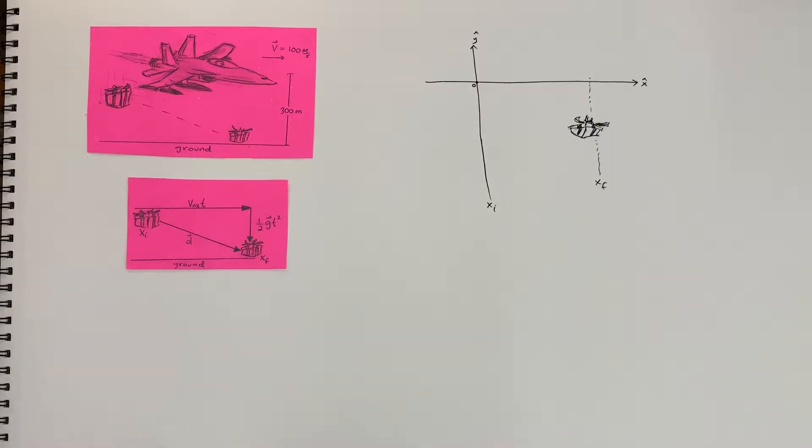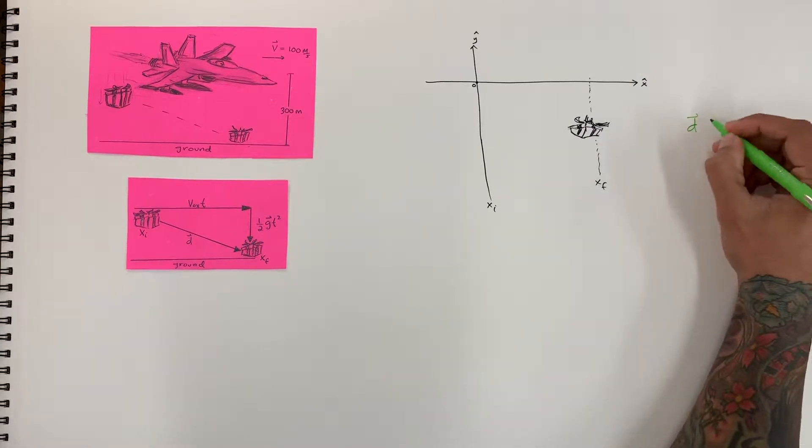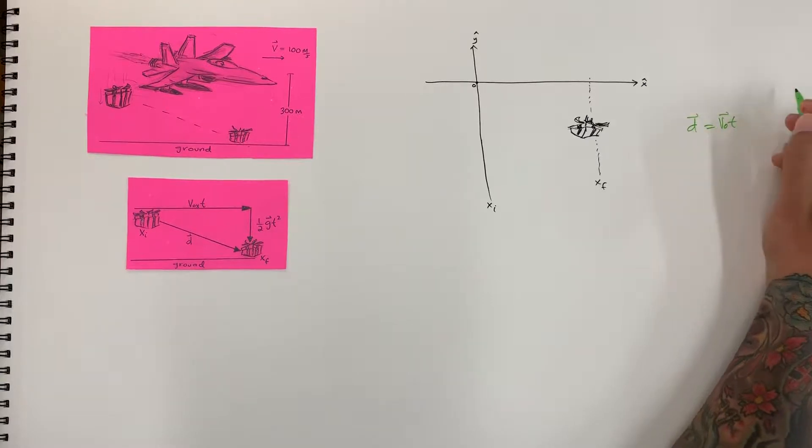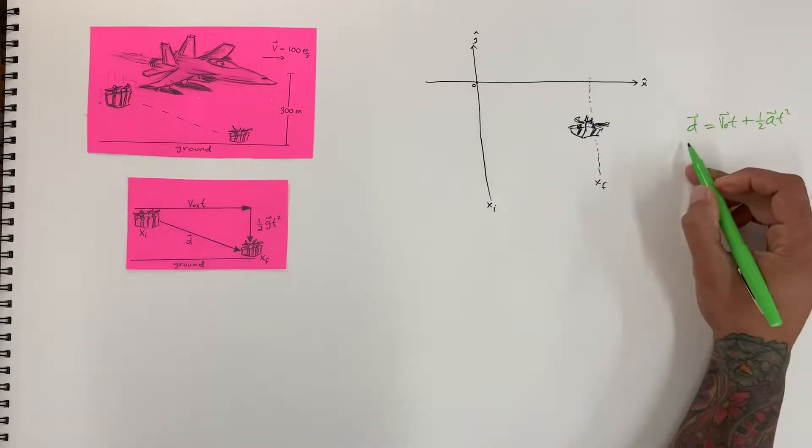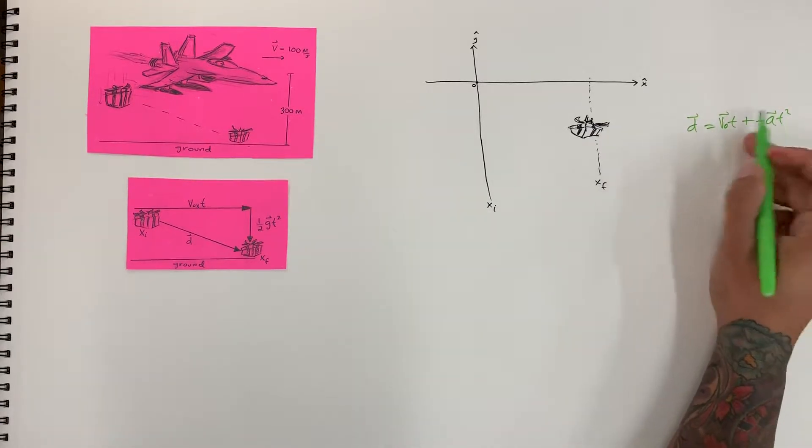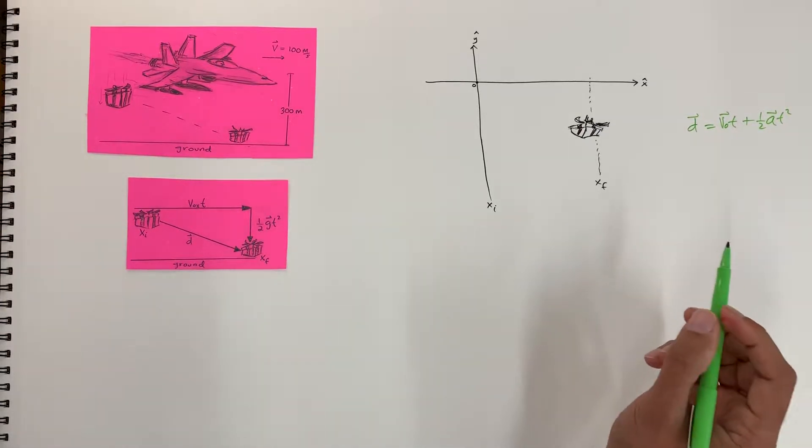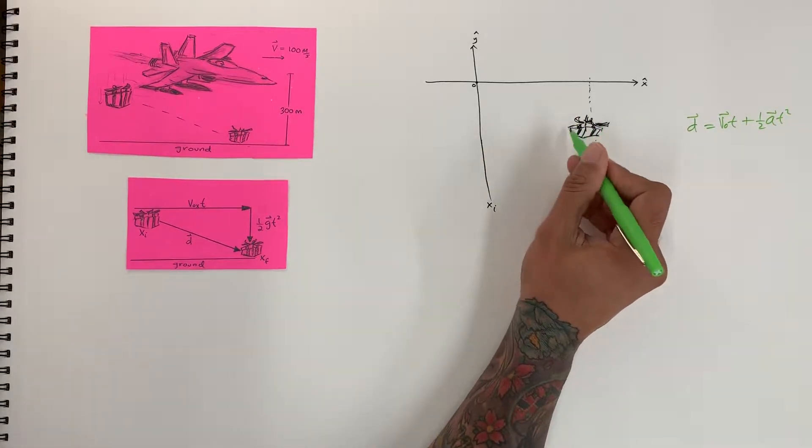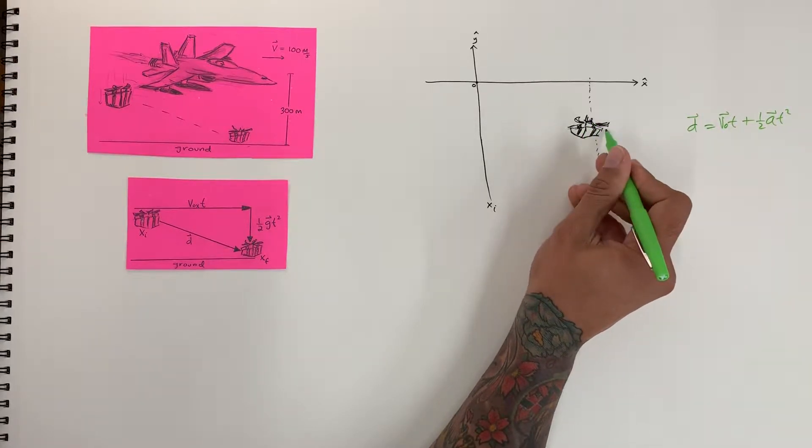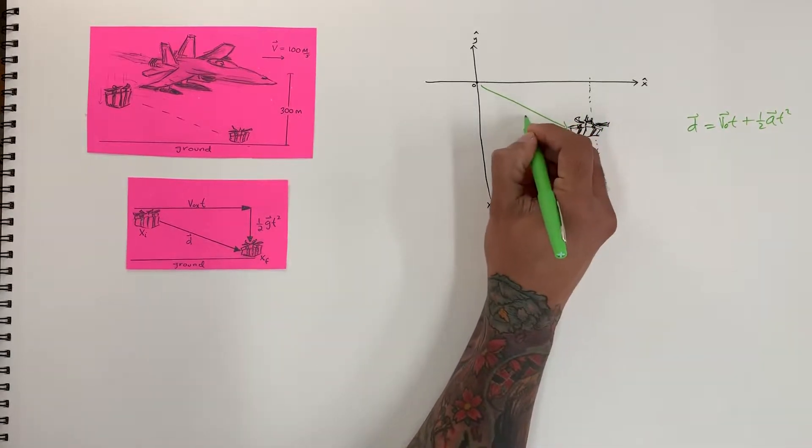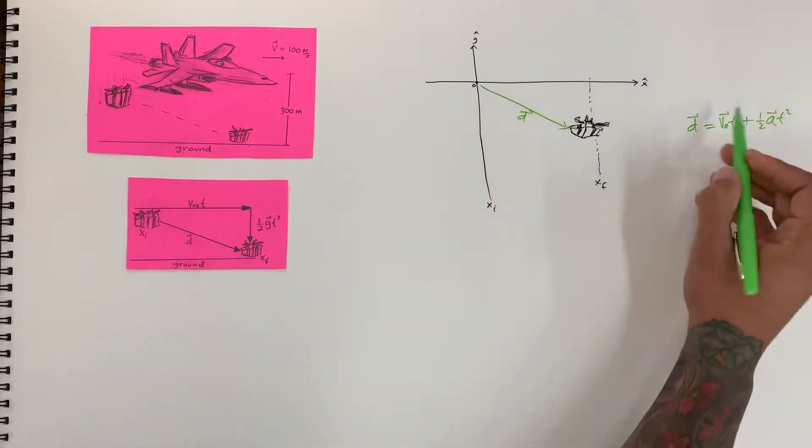All right, so let's use our vector equation. Displacement is going to equal v-initial times time vector plus one-half a t-squared vector. All right, and we know how to draw this triangle, right? The displacement goes to the final position that we're interested in. So the final position we're interested in is where the package ended up at, its final position. So we're going to draw a vector right to it, and that is d for displacement.